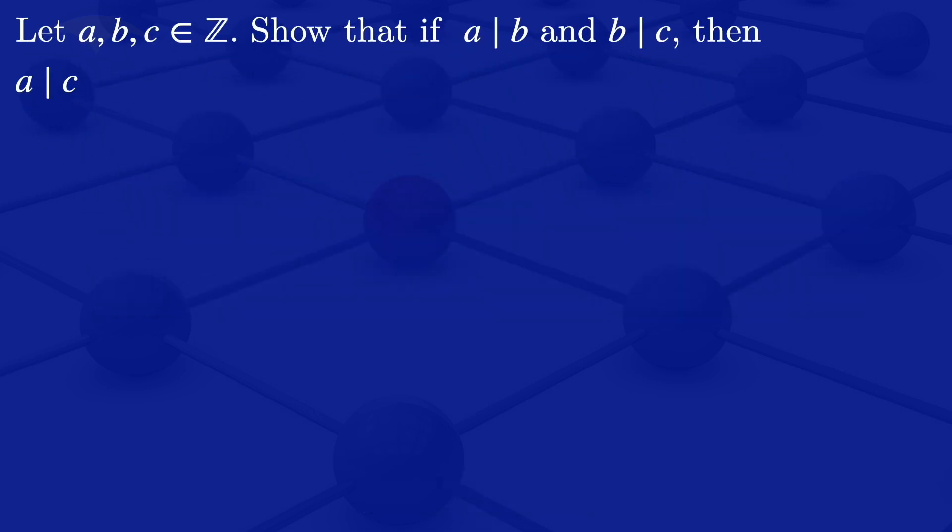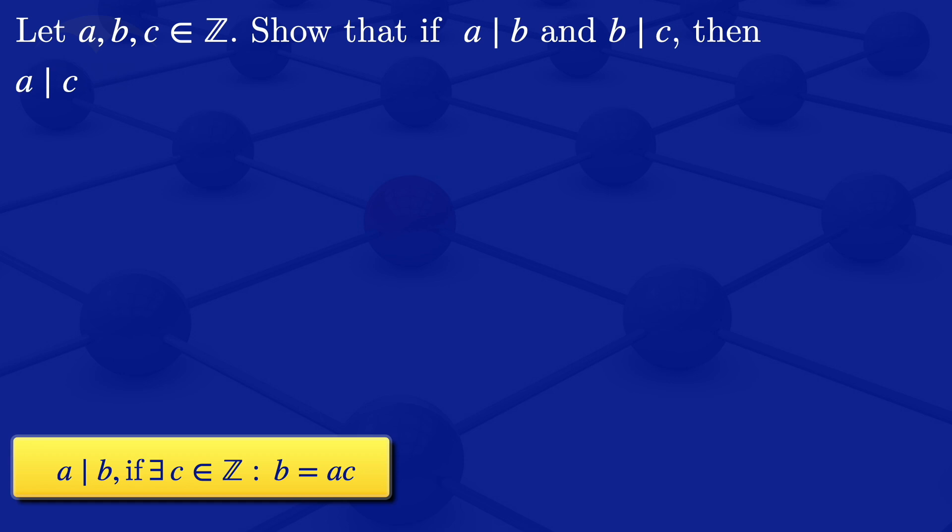To show this I am going to use the definition. By definition we have that if A divides B, then there exists an integer C such that B is equal to AC.